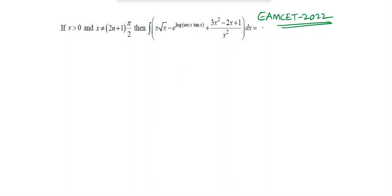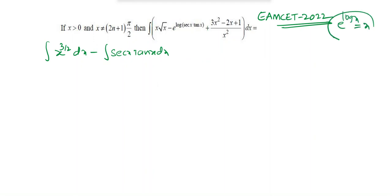This is an MSet 2022 problem. Integration of x·√x, which is x^(3/2), dx minus integration of e^(log(secx·tanx)) dx. Using the formula e^(log x) = x, we get e^(log(secx·tanx)) = secx·tanx. So the second integral becomes integration of secx·tanx dx, which equals secx.